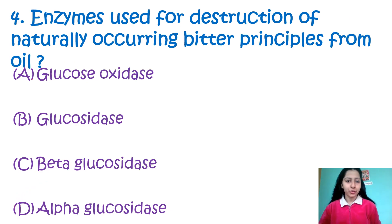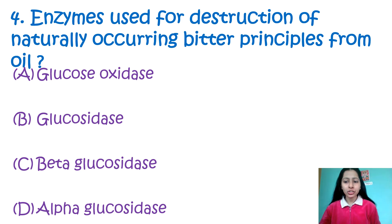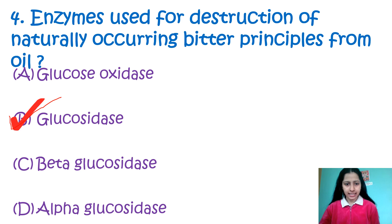Question number 4: Enzyme used for destruction of naturally occurring bitter principles from oil — Option A: glucose oxidase, Option B: glucosidase, Option C: bitter glucosidase, Option D: alpha glucosidase. The enzyme used for the destruction of naturally occurring bitterness in oil is glucosidase — that is option number B.